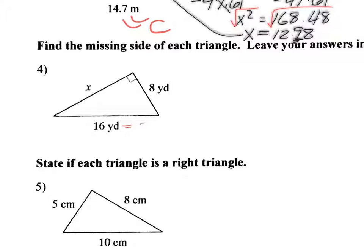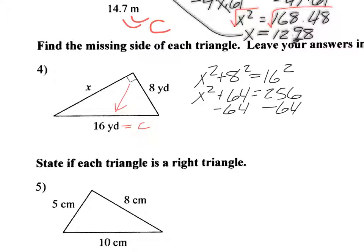This is your C because it's across from the right angle. So we have x squared plus 8 squared equals 16 squared. So that's x squared plus 64 equals 256. So 256 minus 64. So you subtract 64 from both sides, and we get 192.